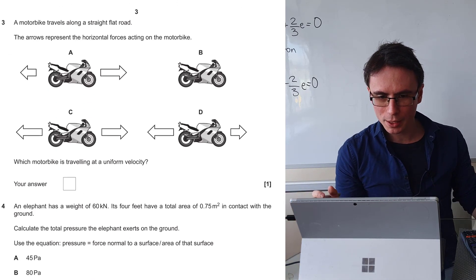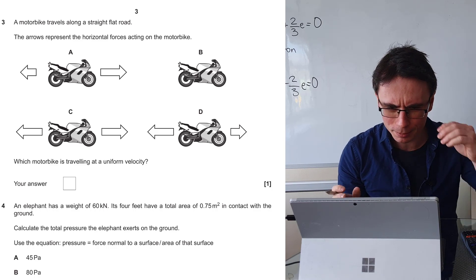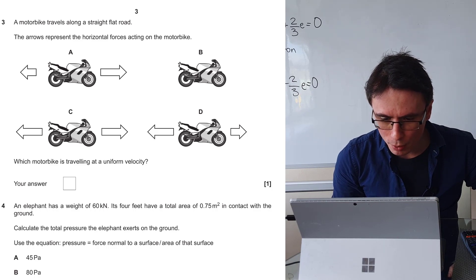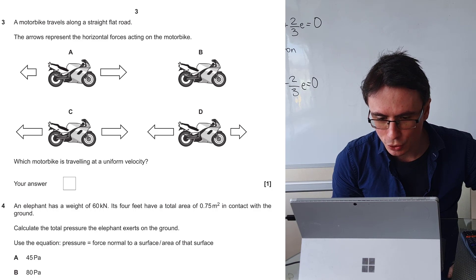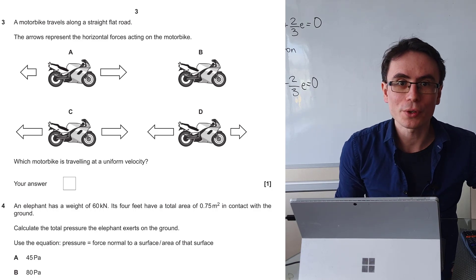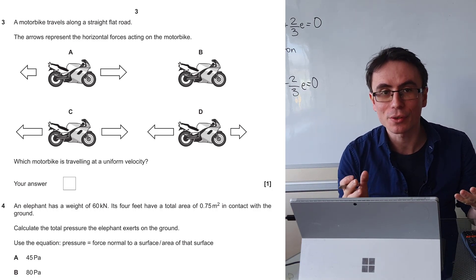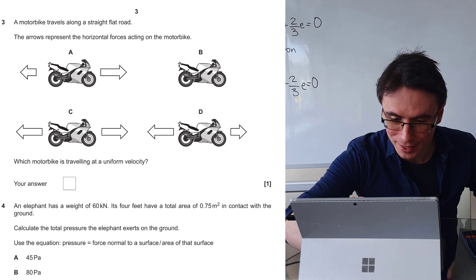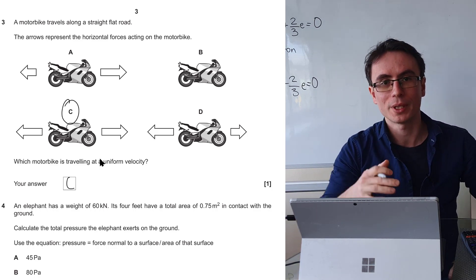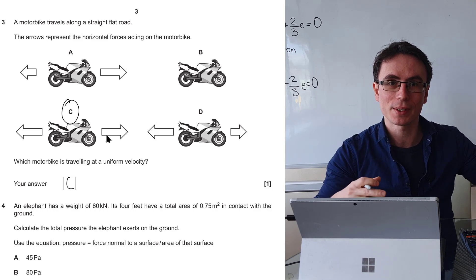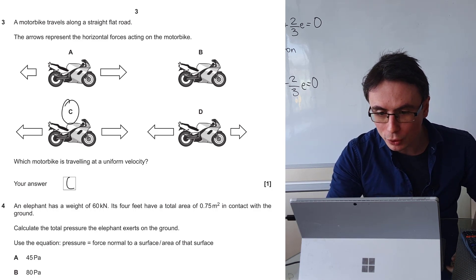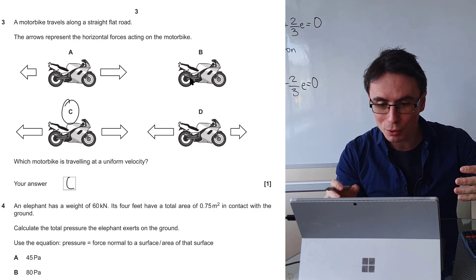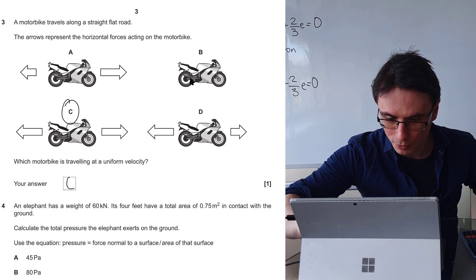We have a motorbike traveling along a straight flat road. The arrows represent the horizontal forces acting on the motorbike. Which motorbike is traveling at uniform velocity? The forces need to be equal and balanced for the bike to be traveling at uniform velocity. The only possible answer here is C because we have that force from the engine pushing the bike forward and we also have air resistance acting in the opposite way.